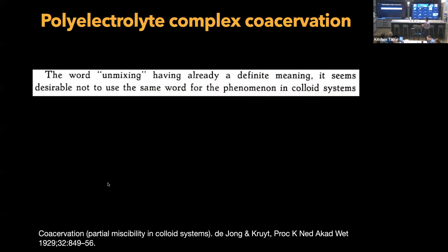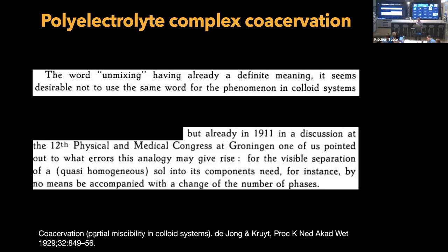This term 'coacervate' was coined about a hundred years ago. In a 1929 paper, De Jong and Kruyt observed spherical clusters when mixing gum arabic with tannin and some other denatured proteins. From these excerpts, it's clear they were struggling with what exactly to call them — they're unmixed, but it's not really unmixing. There was discussion about whether these are phase-separated or not. Eventually they chose the term 'coacervation,' which comes from the Latin 'co-acervare,' meaning simply to pile up — showing how terminology discussions have been ongoing for the last hundred years.